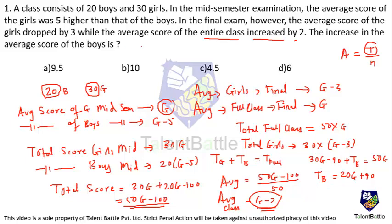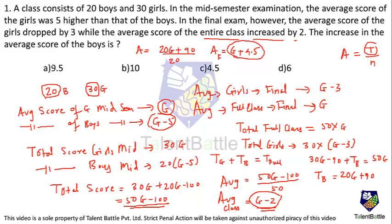Now let's calculate the average score of boys in the final exam: total of boys divided by number of boys equals (20g plus 90) divided by 20, which gives g plus 4.5. Previously the average score of boys was g minus 5. Now the average score of boys in the final exam is g plus 4.5. So the increase is (g plus 4.5) minus (g minus 5), and g cancels out, giving 9.5. The increase in the average score of boys is option A: 9.5.